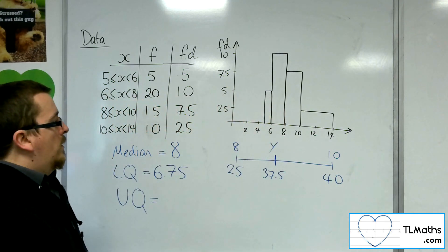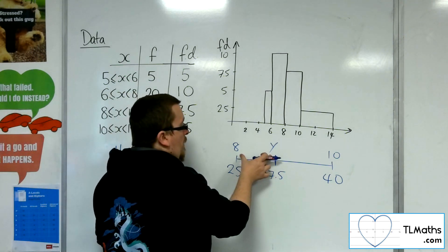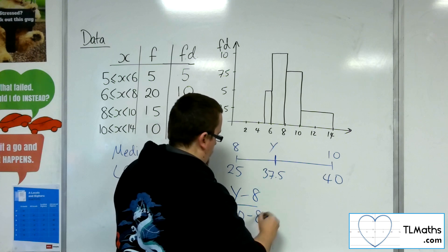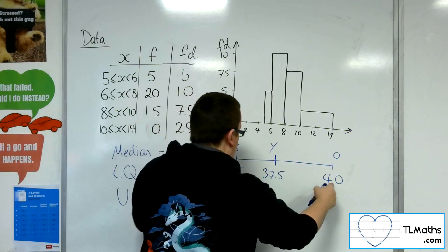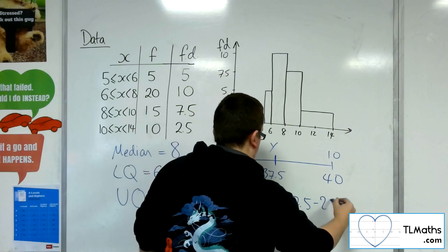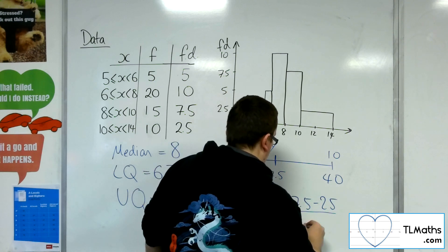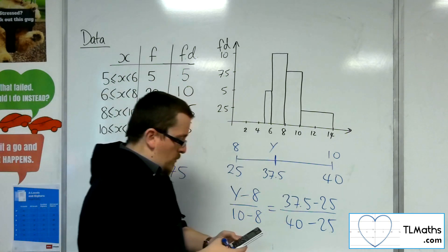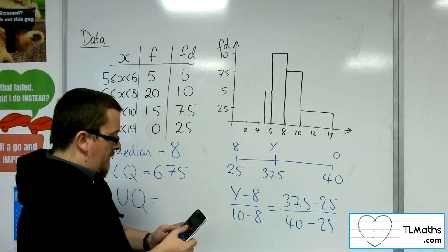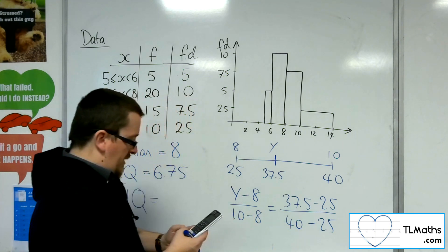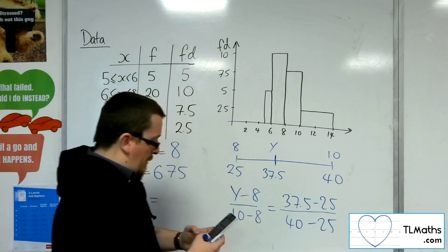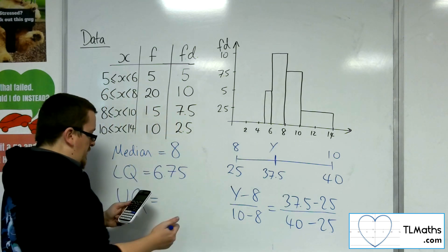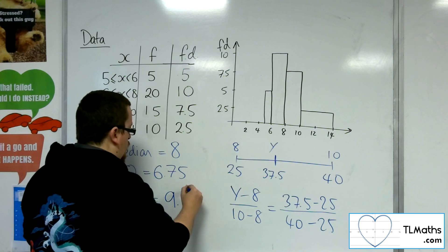So we're going to work through a similar calculation. The ratio of that distance to that distance must be the same as the ratio of that distance to that distance. So then that gives you an equation to solve. So 37.5 take away 25 divided by 40 take away 25. That gives me 5 sixths. I multiply that by 2, and then add on the 8. So that gives me 29 thirds, or 9.6 recurring.